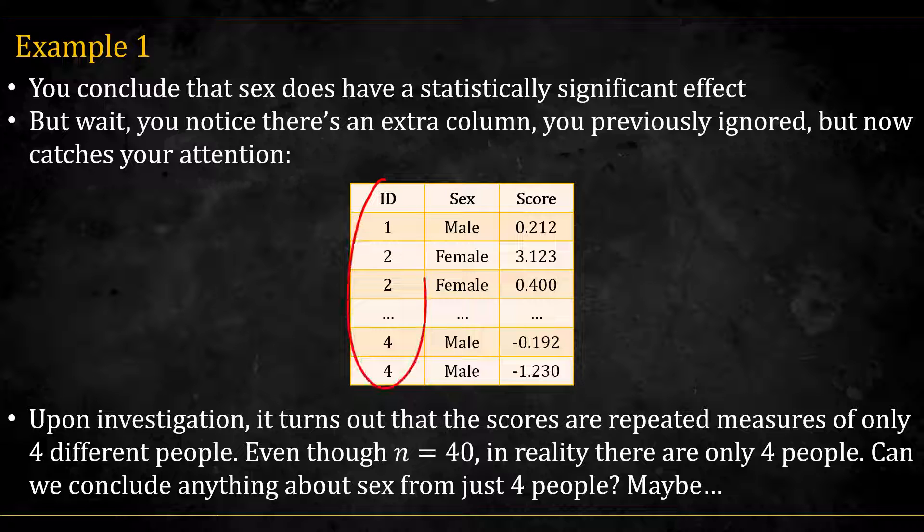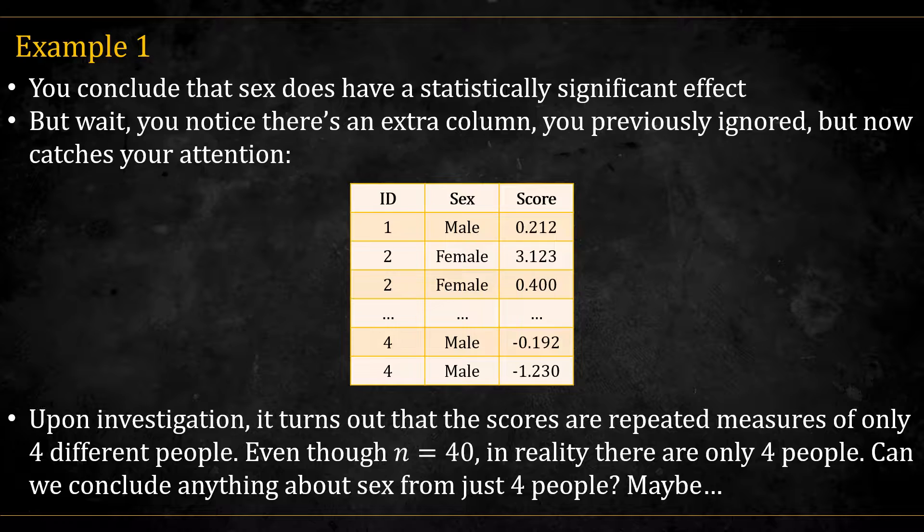But wait, then you notice this extra column, which you previously ignored: ID. And upon investigation, you find out that the scores are repeated measures of only four different people. So even though n is equal to 40, in reality we only have four people. Can you really conclude anything from just four people? Well, maybe, but the model you used is inappropriate.